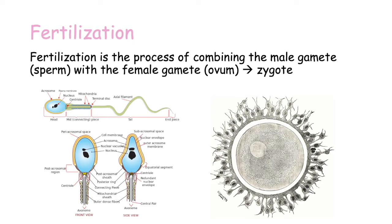To understand fertilization we first have to be familiar with the different components of the sperm and the egg. Here on the right we have a human egg and we can see this structure around it. These are granulosa cells expelled together with the egg during ovulation, called the corona radiata or the cumulus oophorus. We also have the zona pellucida, drawn in white, which is a thick transparent membrane that surrounds the egg.